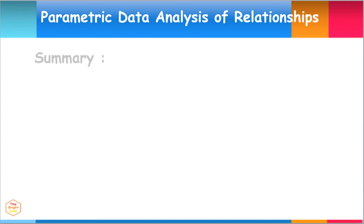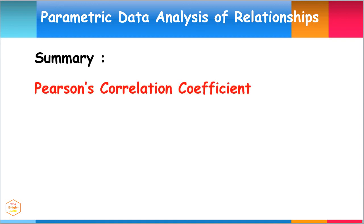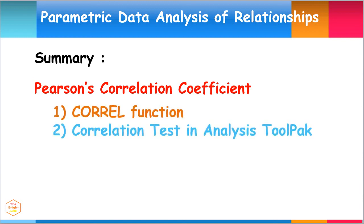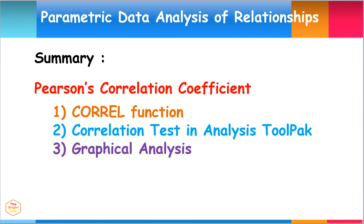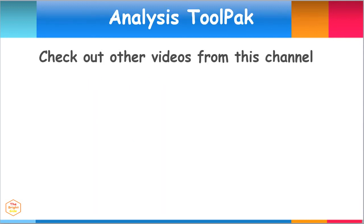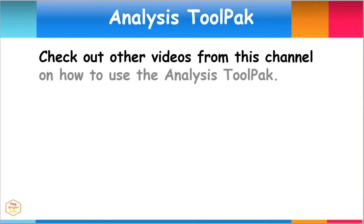In summary, we discussed how to get the Pearson's R correlation coefficient by using the CORREL function, the correlation test in the Analysis Tool Pack, and by graphical analysis. Please check out other videos from this channel on how to use the Analysis Tool Pack.